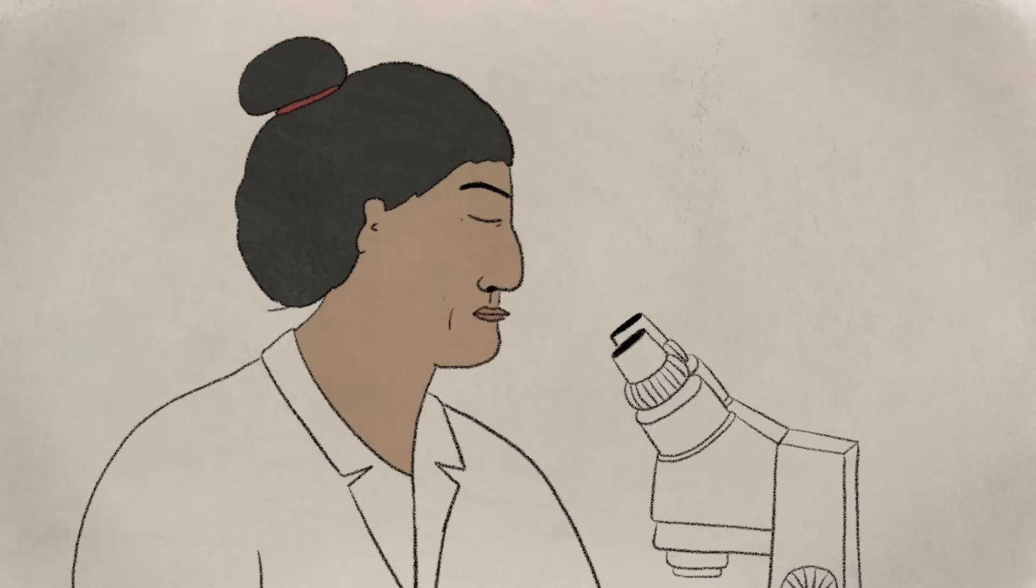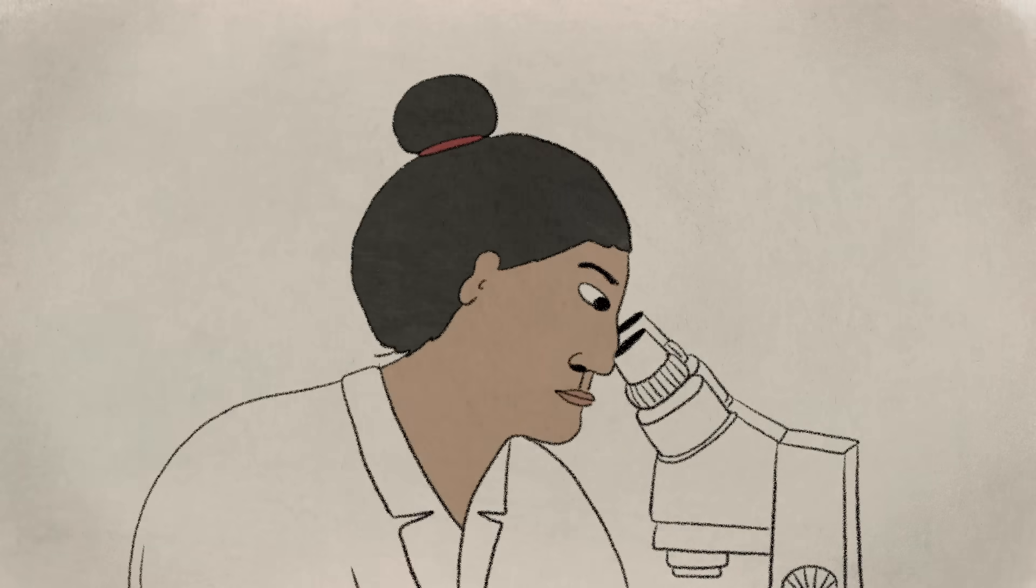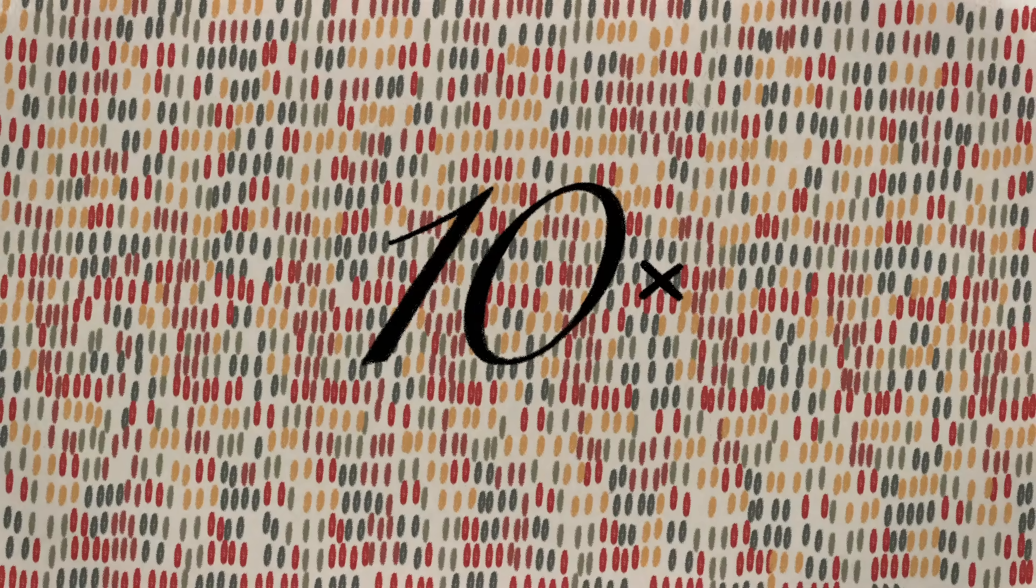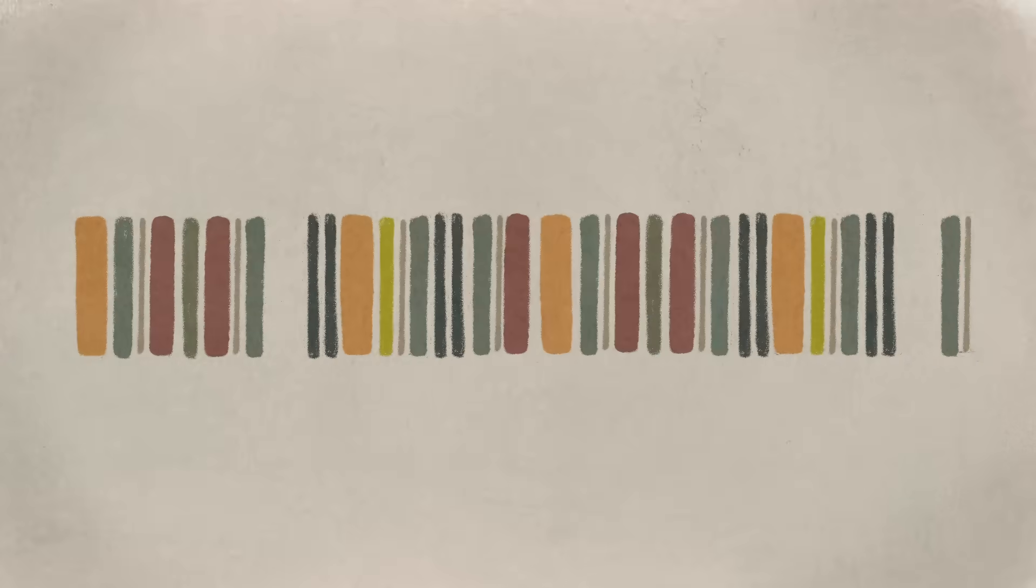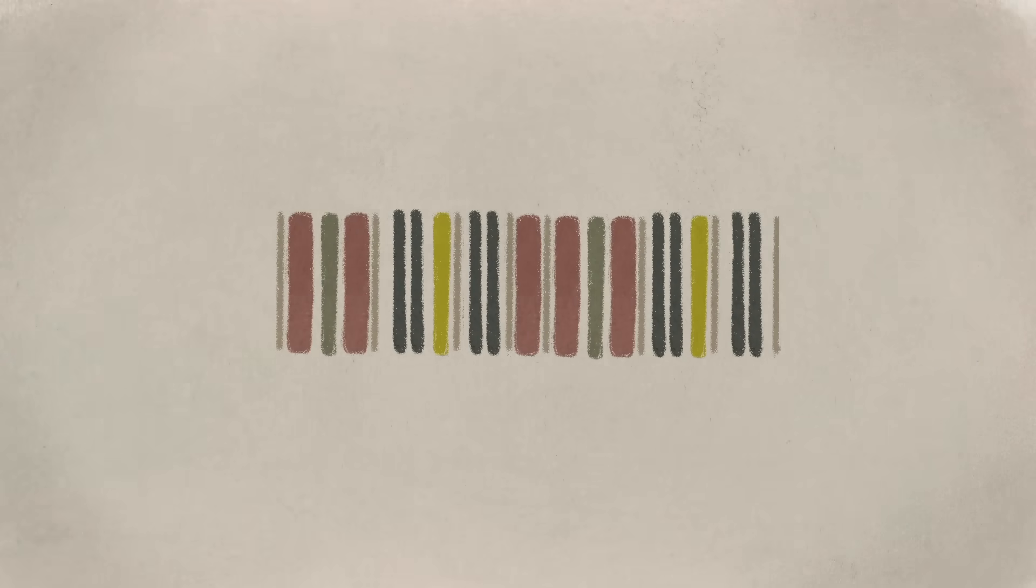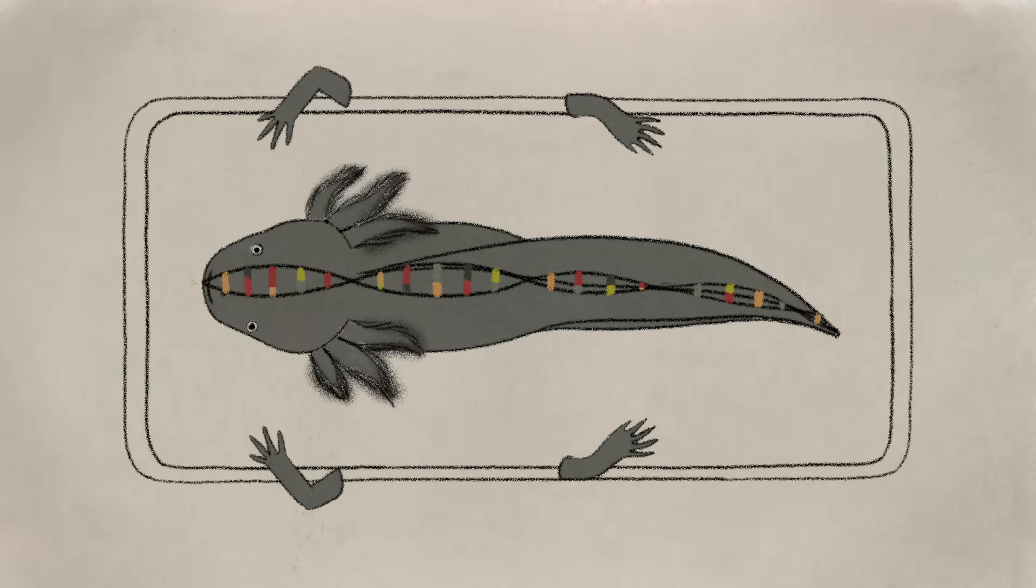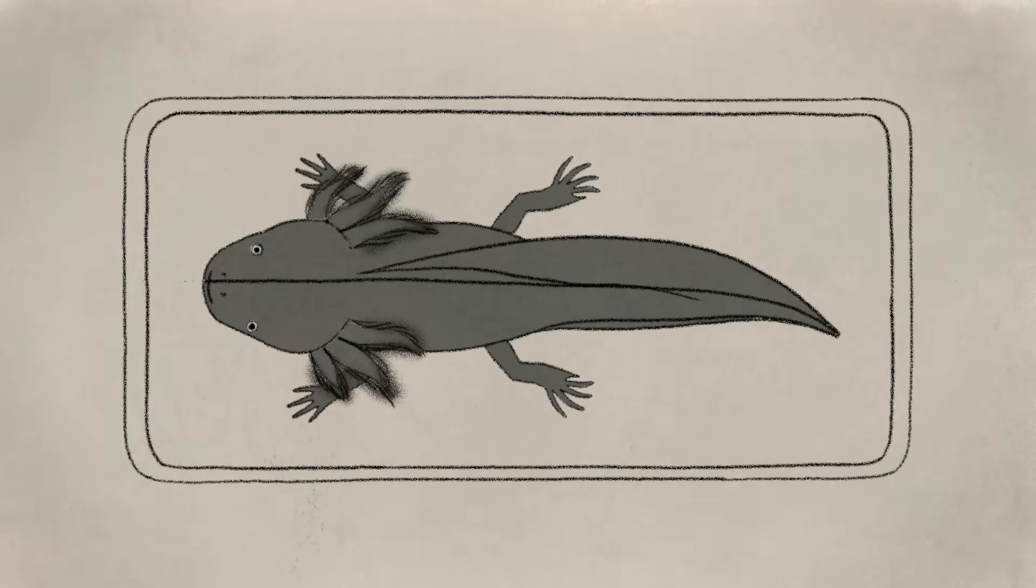To better understand the axolotl's baffling biology, scientists sequenced its genome. They found it to be more than 10 times longer than a human's. Mutations can change the length of any animal's genome. For whatever reason, salamanders have much more DNA than other vertebrates, because they lose parts of it less frequently.